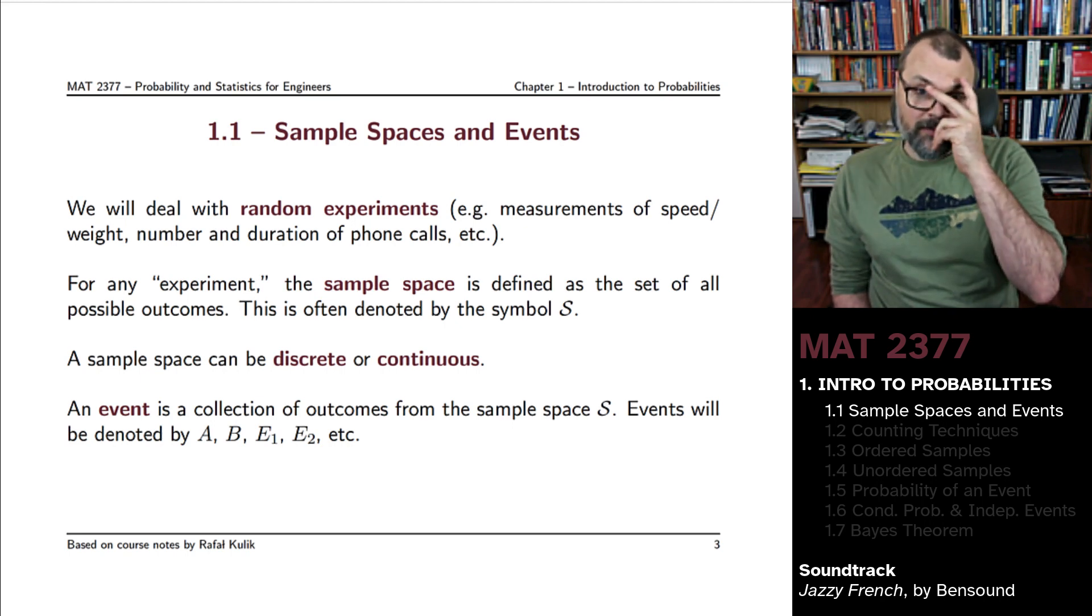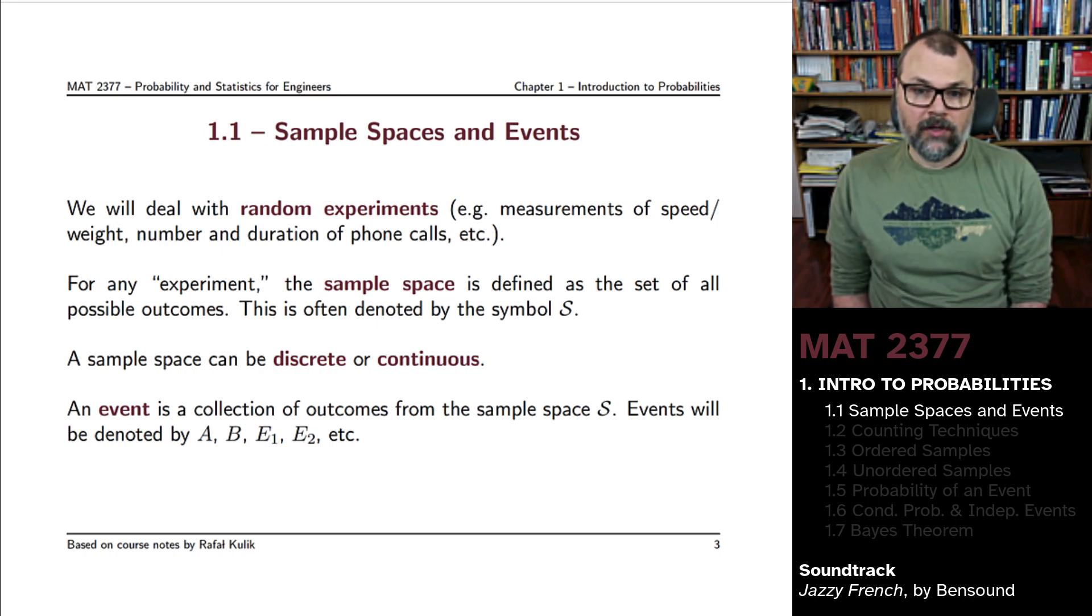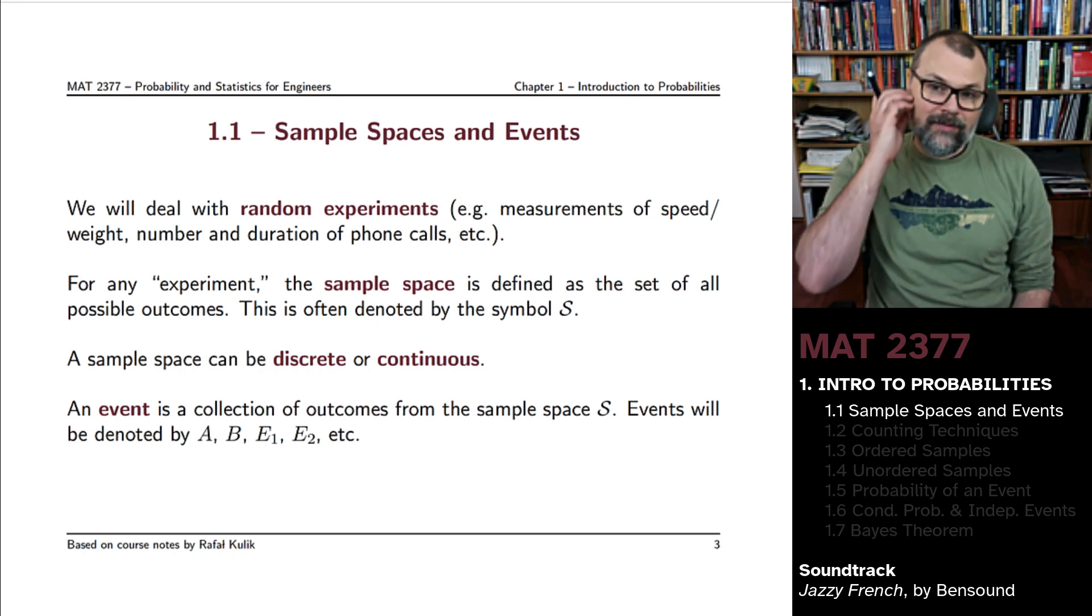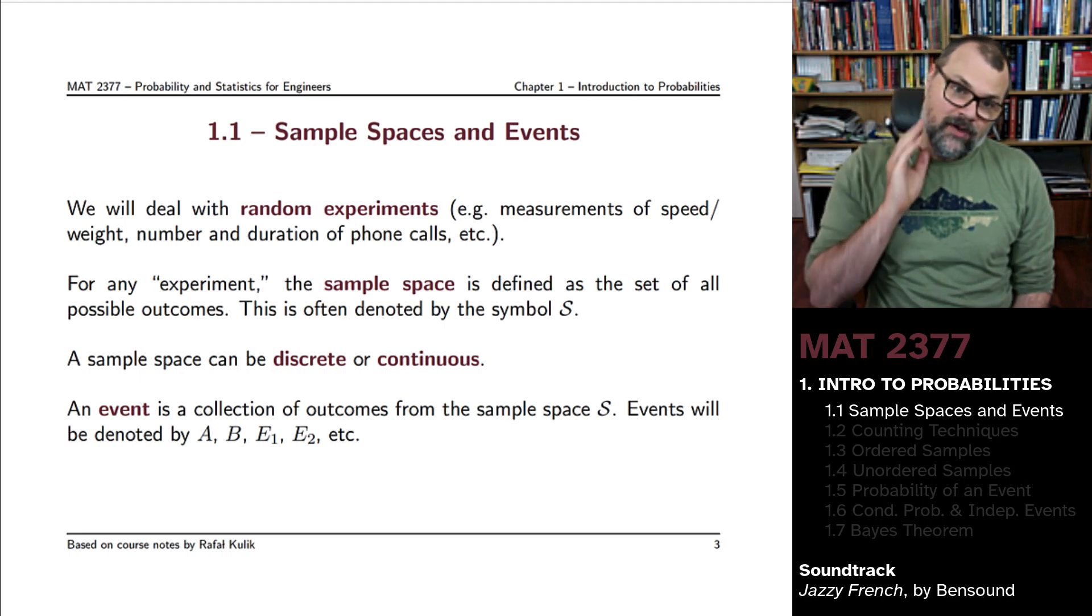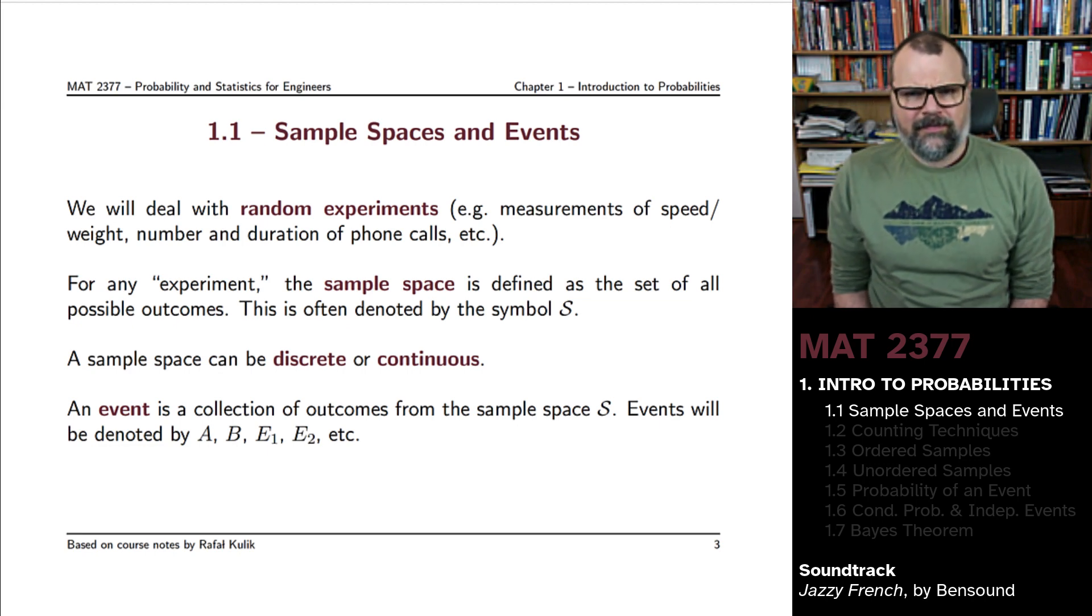The set of outcomes, the sample space, we'll call it usually S. Now depending on the type of measurements we have, the sample space can be discrete or continuous. In practice, most sample spaces are discrete.